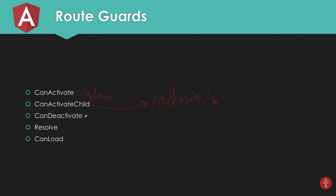resolve is used to resolve some data before the user actually sees the route — you can use it to get data from an API server first. canLoad is different from canActivate: canActivate loads the component and then checks if the user is eligible, whereas canLoad lazily checks eligibility first before loading anything. So canLoad does the enquiry from the user first; if eligible, it allows the user to see the route, whereas canActivate loads the component first and then checks.